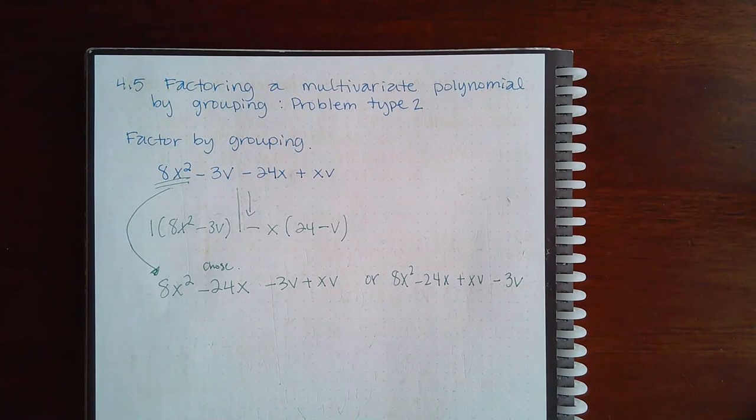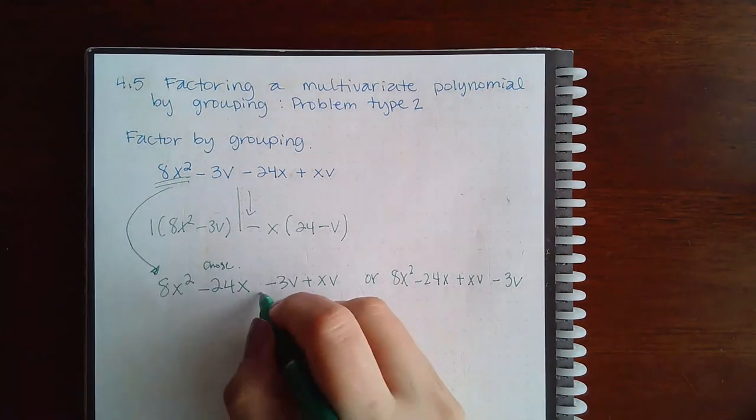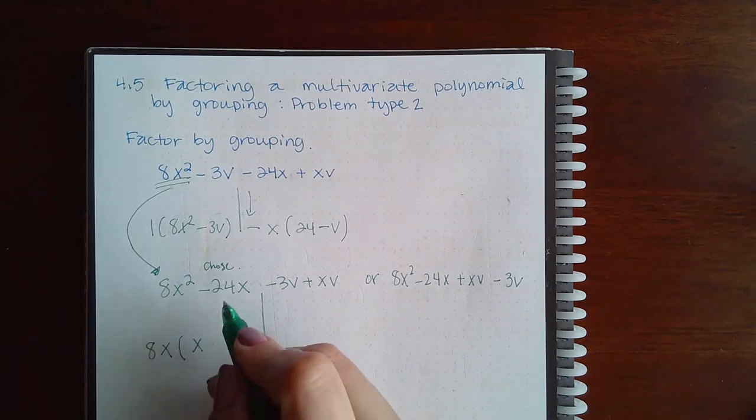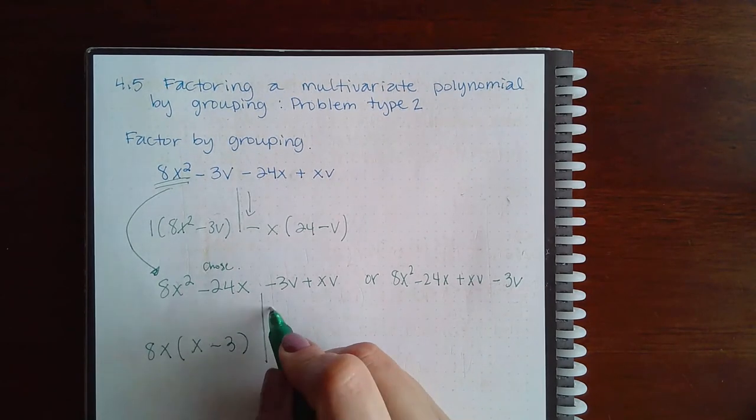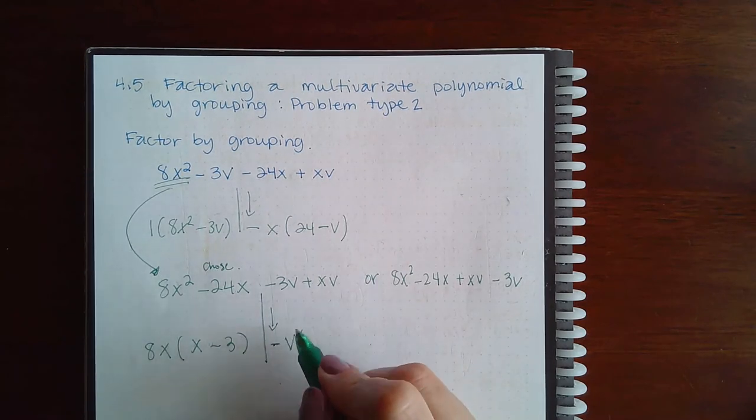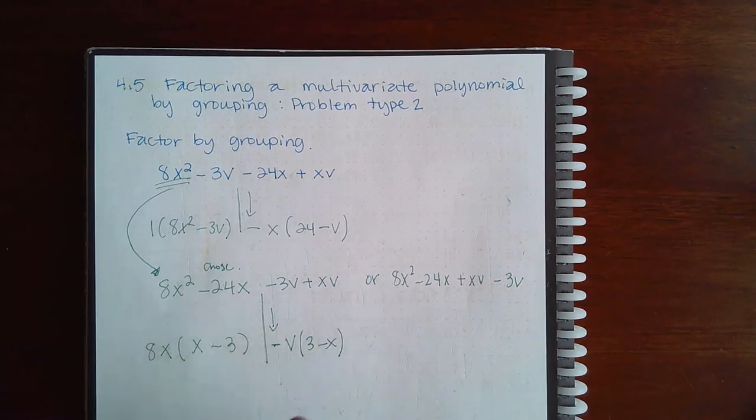So if I group this, this side has an 8 in common and an x in common, so I end up with x minus 3 here. I bring down the minus. They have a v in common, and I'm left with positive 3 and a negative x. Notice that these are not exactly the same.